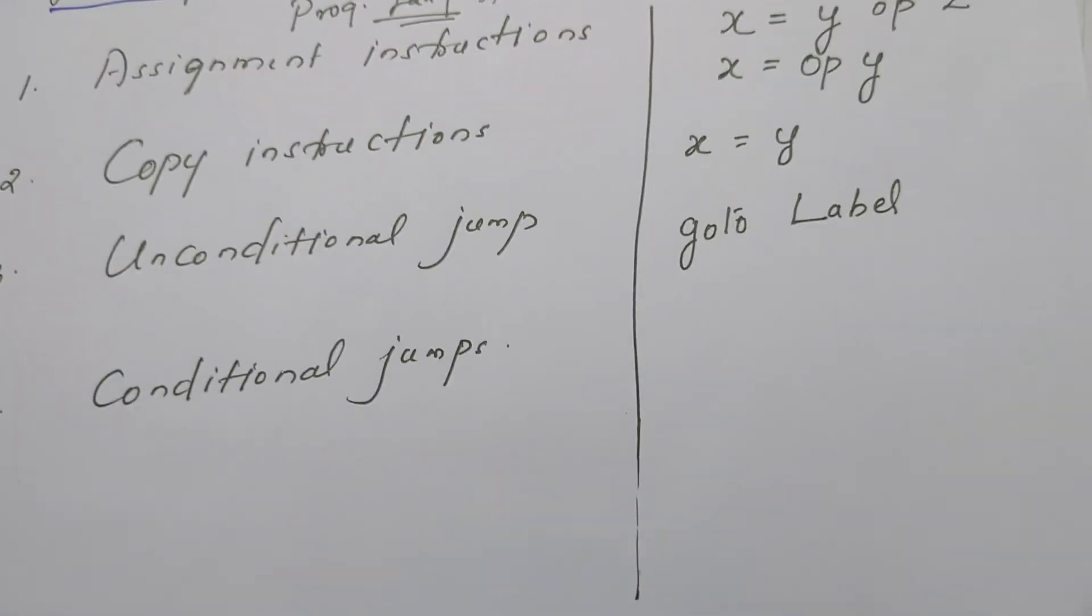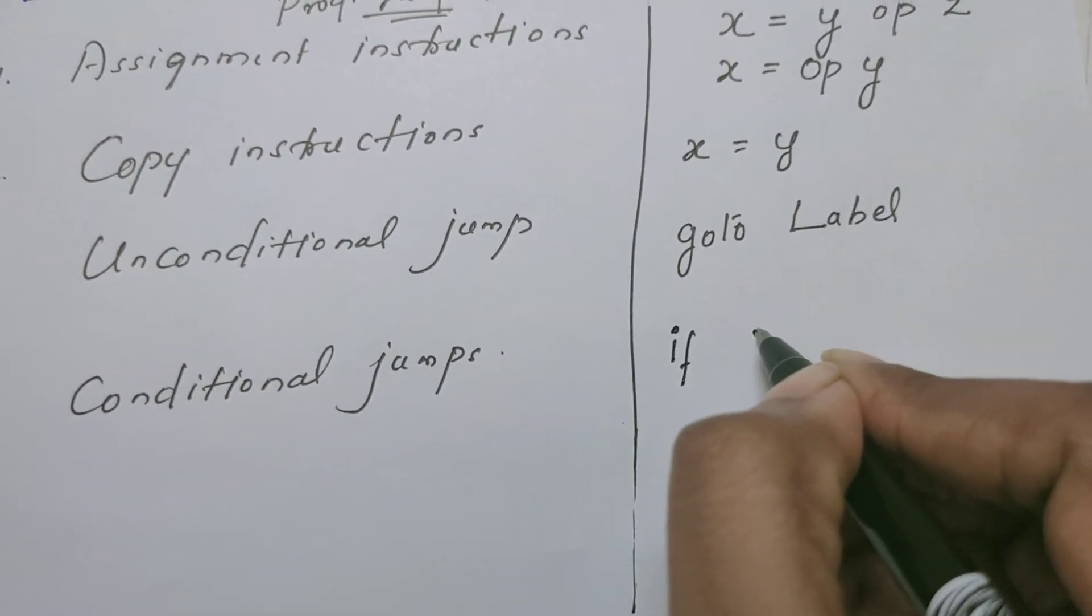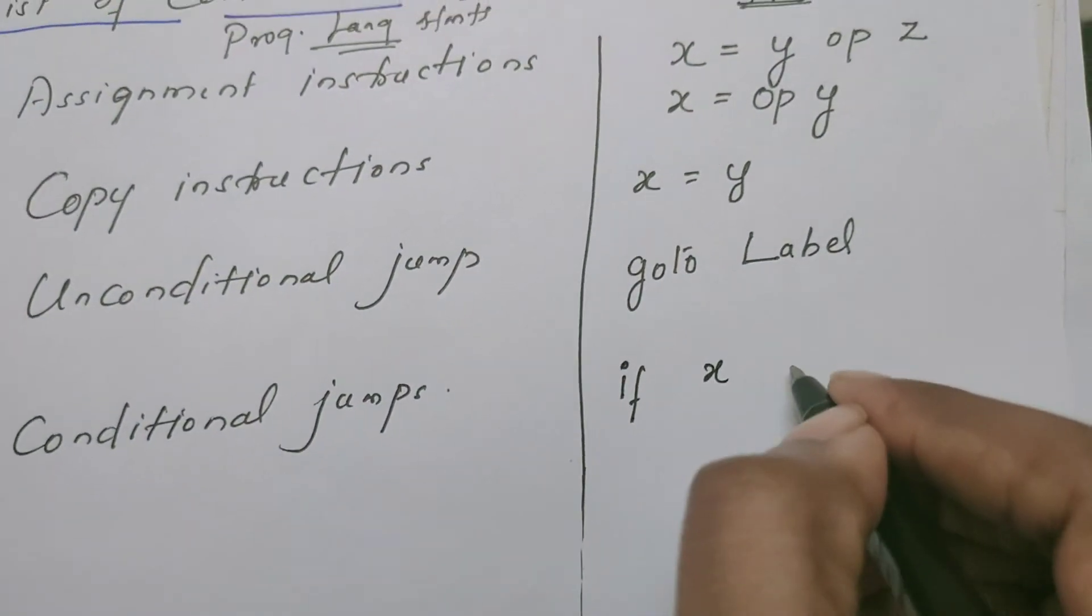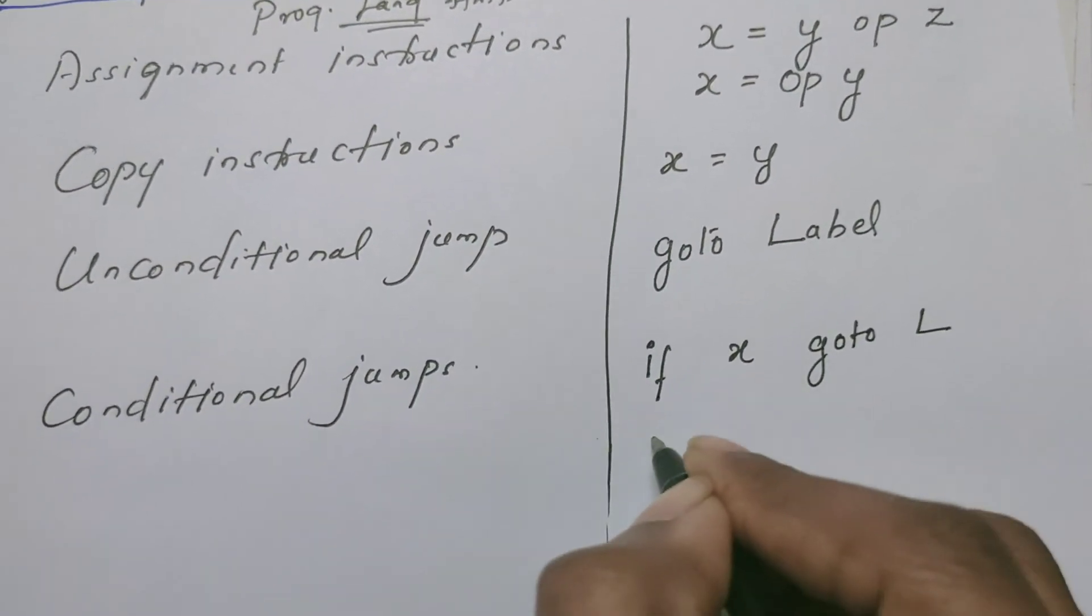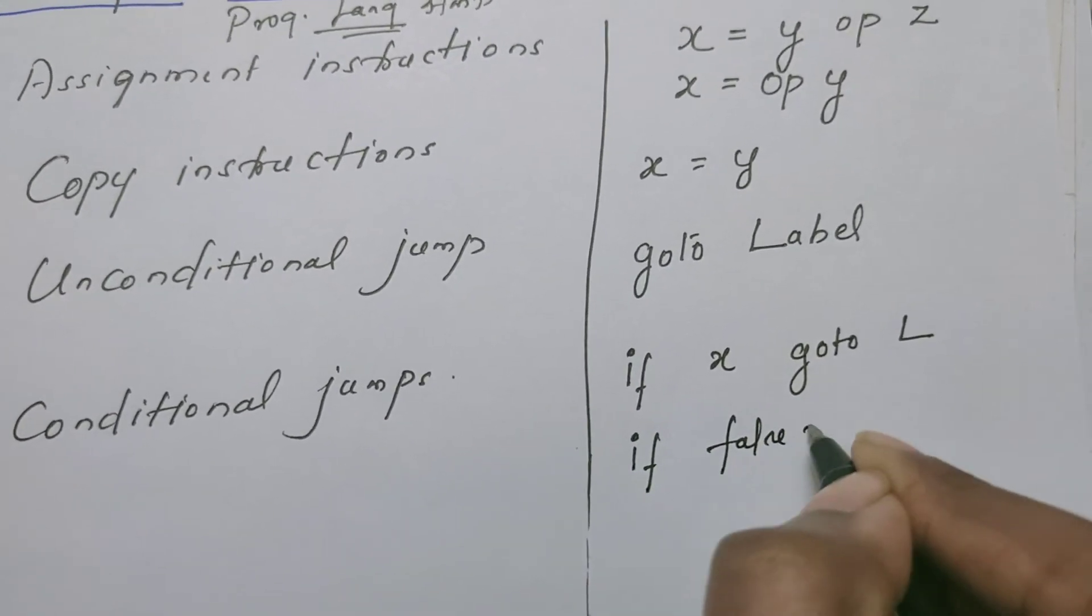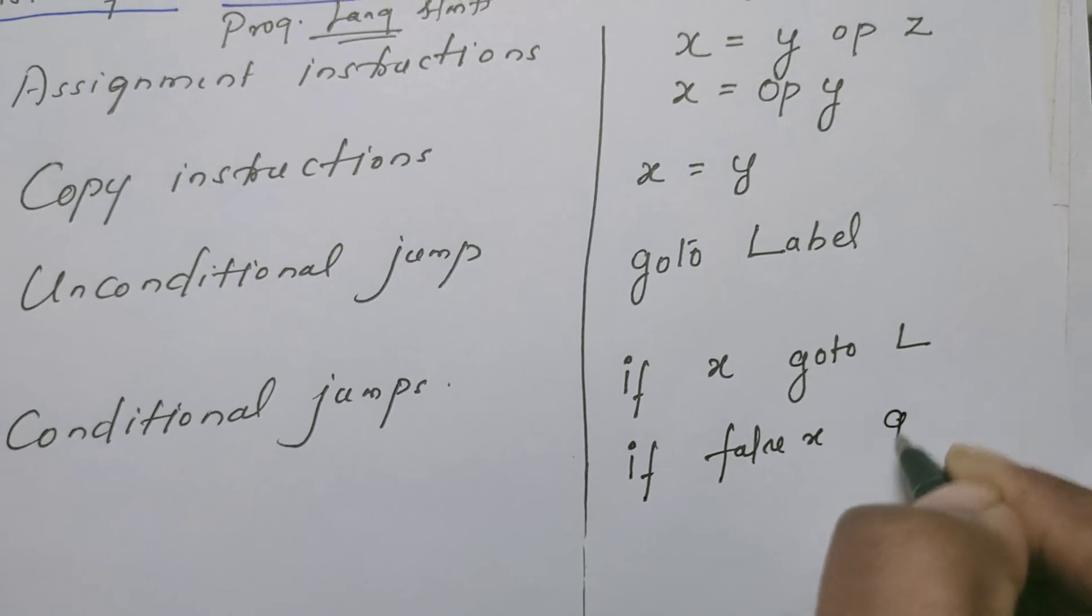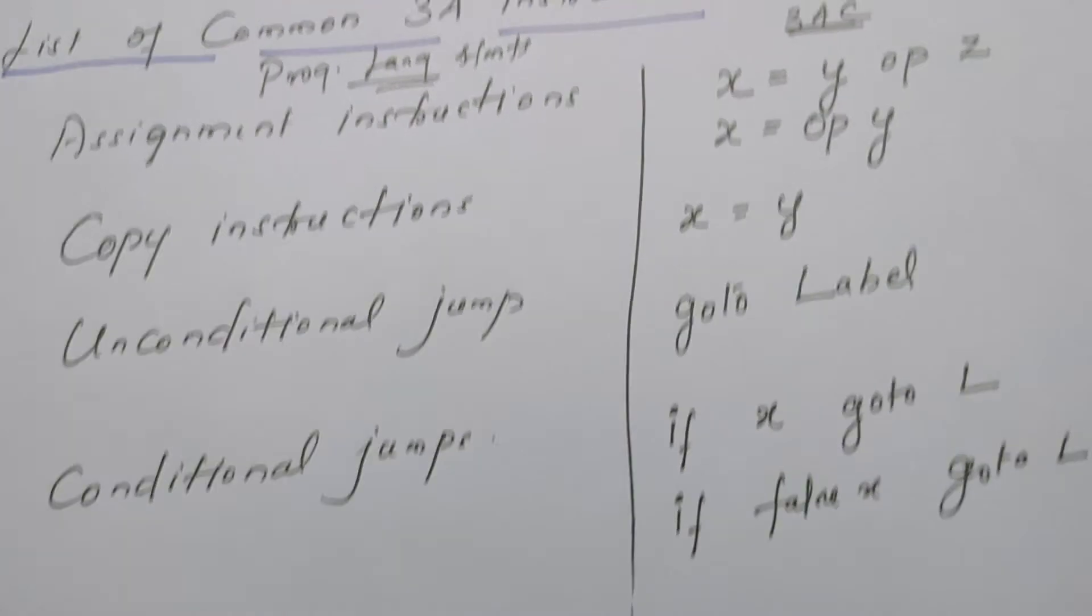How do we write the conditional jumps? Conditional jumps is also simple. If x is a condition, go to L. Or we can write it in other way also: if false x, if x is false, go to L, where L is the label.